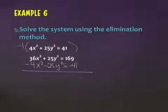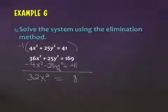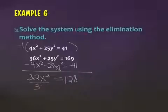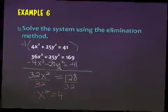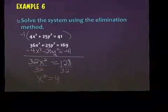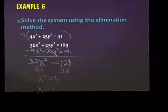And then add these — I get 32x squared. The y squared terms cancel. Equals 128. And I only have one variable, so I don't have to factor here. I can simply divide by 32, which gives 4. And then square root, making sure I do plus and minus.